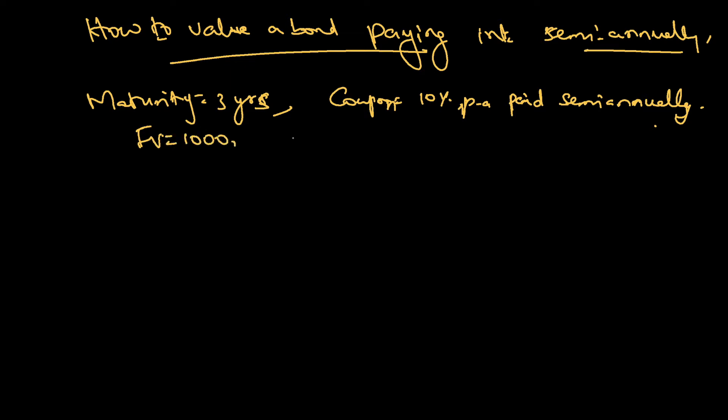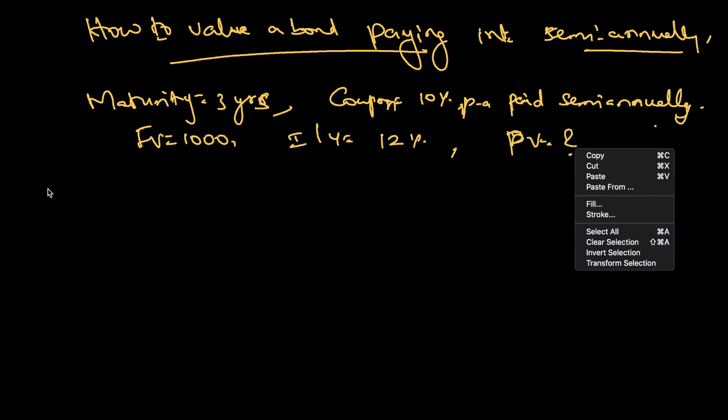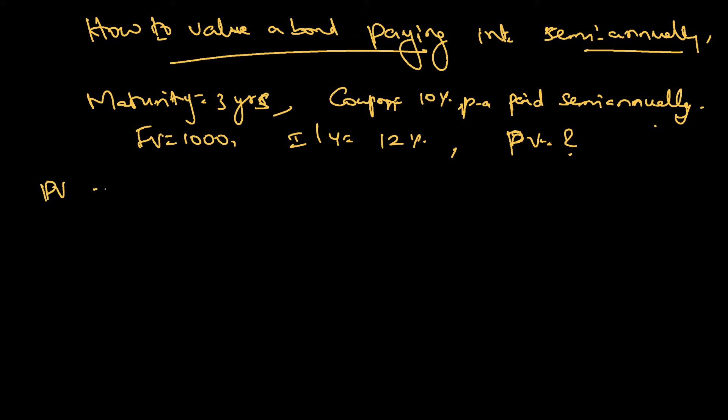So 10 percentage per annum paid semi-annually, future value equals 1000, interest per year prevailing is let's say 12 percentage. So what is the present value? That's the question.